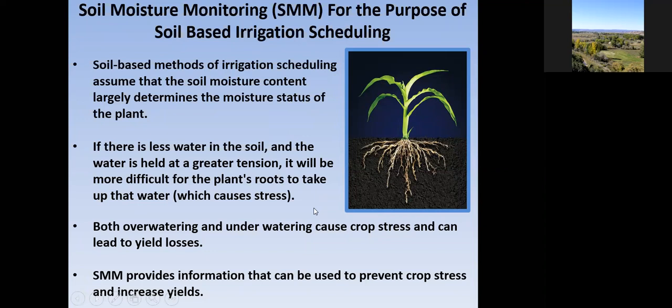The soil moisture monitoring I'm going to be talking about today is for the purpose of soil-based irrigation scheduling. People do soil moisture monitoring for lots of different things, but we're ag-centered here. Soil-based methods of irrigation scheduling assume that the soil moisture content will largely determine the moisture status of the plant. If there is less water in the soil and the water is held at a greater tension, it will be more difficult for the plant's roots to take up that water, which will cause plant stress. Both over-watering and under-watering cause crop stress and can lead to yield losses.